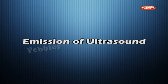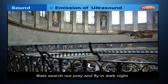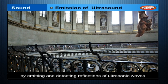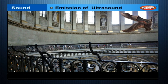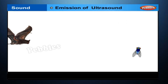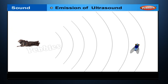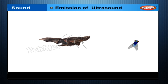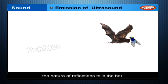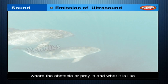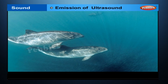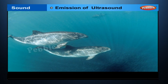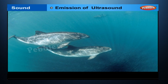Bats search out prey and fly in the dark of night by emitting and detecting reflections of ultrasonic waves. The high-pitched squeaks of the bat are reflected from obstacles or prey and returned to the bat's ear. The nature of the reflection tells the bat where the obstacle or prey is and what it is like. Porpoises also use ultrasound for navigation and location of food in the dark.